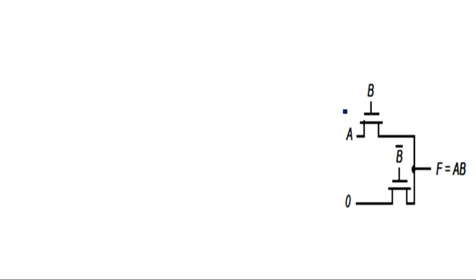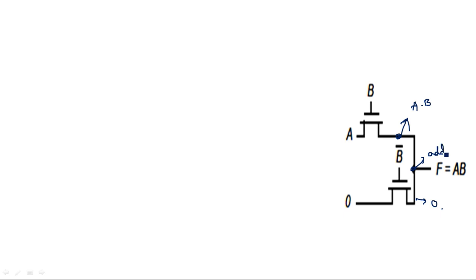To implement AND, we use two pass transistors with control inputs B and B-bar, and original inputs A and 0. At the output node, the voltage is A times B — the input voltage and the control voltage multiplied give the output. The other branch gives 0, since 0 times B-bar equals 0. So the overall function is AB plus 0, which equals AB. This is how we realize a logical AND function using pass transistors.